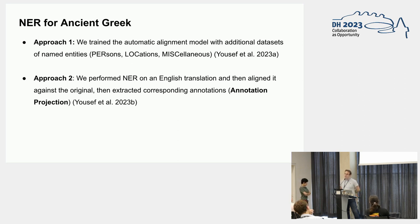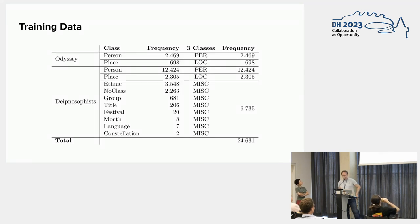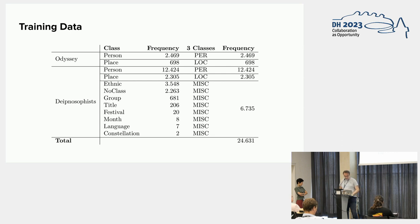The second approach was annotation projection: given a parallel corpus like Greek-English, since we have many accurate NER tools for English, we could annotate the English text, perform translation alignment, and then project the annotations from English to ancient Greek. For the first workflow, we used three main labels: persons, locations, and miscellaneous. We collected data from the Perseus Digital Library and the Digital Athenaeus project — text was annotated with Inception, and Chiara also annotated the Odyssey using Recogito. The Digital Athenaeus used many labels which we reduced to three, yielding almost 24,000 entities in our training data.